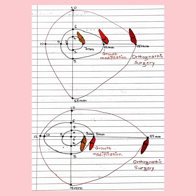It is easier to take the premaxilla and mandible back than to take them forward. For intrusion in the maxilla, if the tooth is extruded by 2 mm, then 2 mm of intrusion can be brought about by orthodontic treatment, 5 mm of intrusion by orthodontic treatment combined with growth modification, and 15 mm by orthognathic surgery.